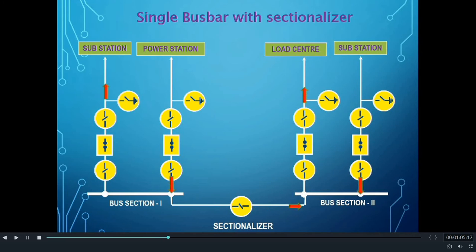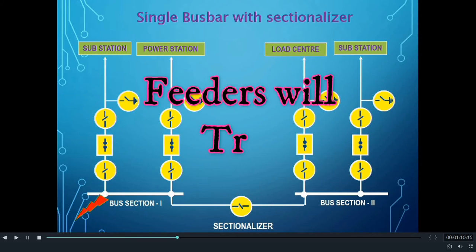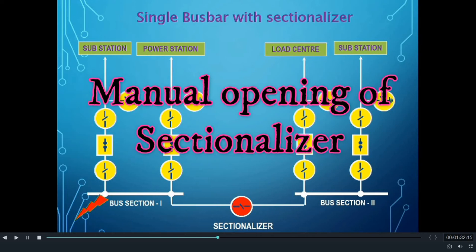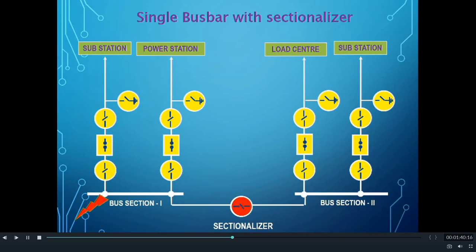For a fault in Bus Section 1, there will be fault currents flowing through all the feeders, and as a result, the relays of all the feeders will actuate and give an opening command to the Circuit Breakers. Because of the opening of the Circuit Breakers, all the feeders will get interrupted. But in a Single Busbar Scheme with Sectionalizer, we have the facility to segregate the faulty section of the bus from the healthy section. We can open the Sectionalizer Isolator and separate the faulty Bus Section 1 from Bus Section 2.